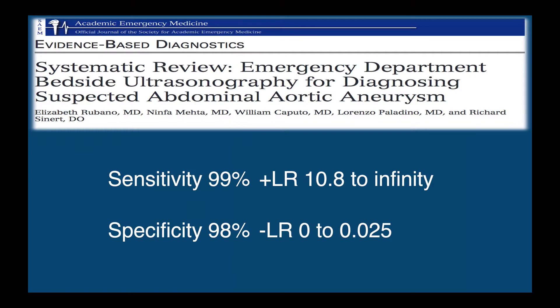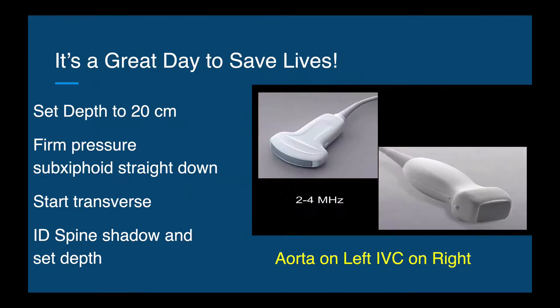The reason why we use ultrasound for the aorta and diagnosing suspected abdominal aortic aneurysm is because it is an excellent modality — it's fast, and it's something you can learn quite quickly. The sensitivity is 99% with a likelihood ratio of 10.8 to infinity. The specificity is 98% with a likelihood ratio of 0 to 0.25. So you can't get much better of a test than this — it's a great day to save lives with our trusty bedside ultrasound.